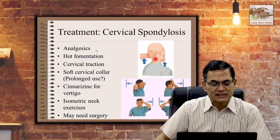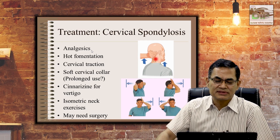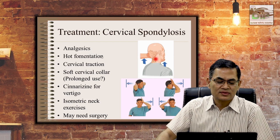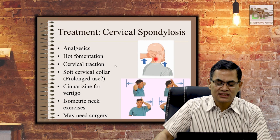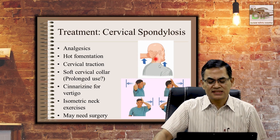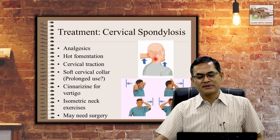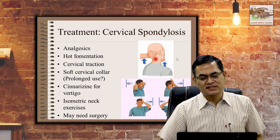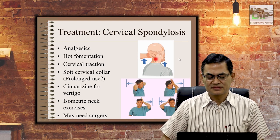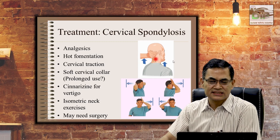For treatment, analgesics are required — first to relieve pain and second to prepare the patient for exercises. Additional options include hot water fomentation and cervical traction. If, when you distract the cervical spine, the patient's pain relieves, then that patient will benefit from cervical traction — not every patient will. By performing this distraction test, you can identify who will benefit from traction and who will not.